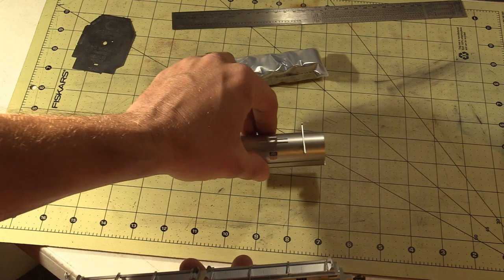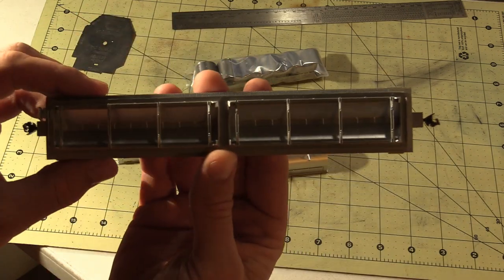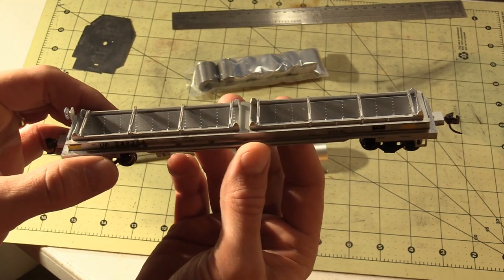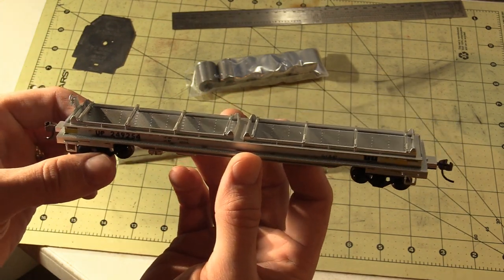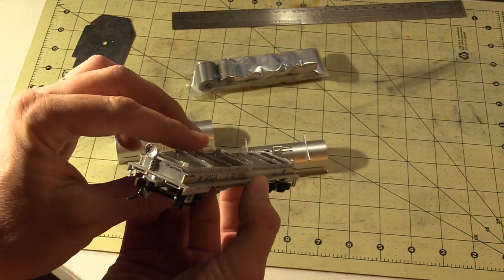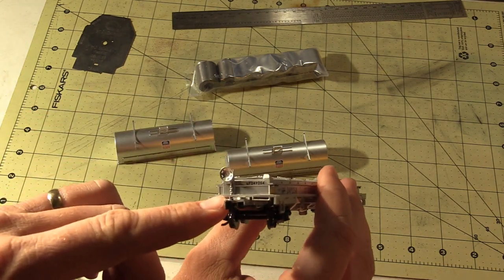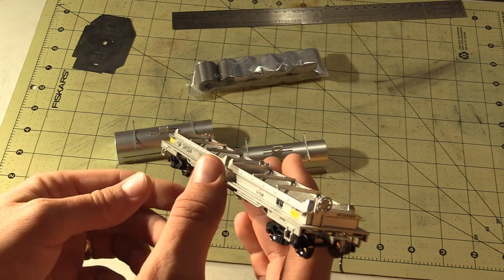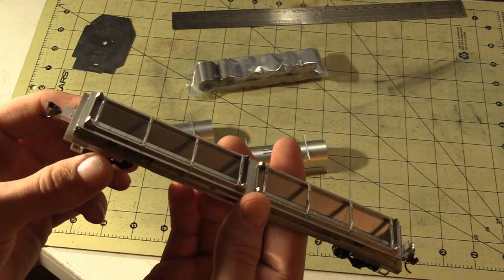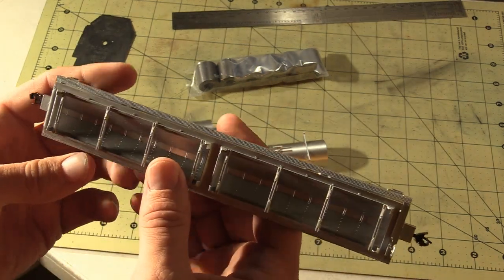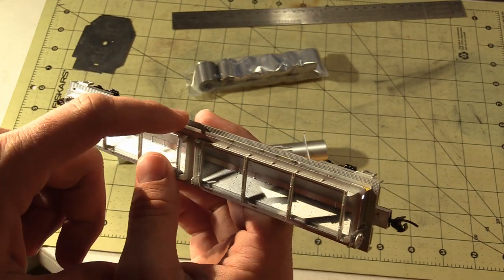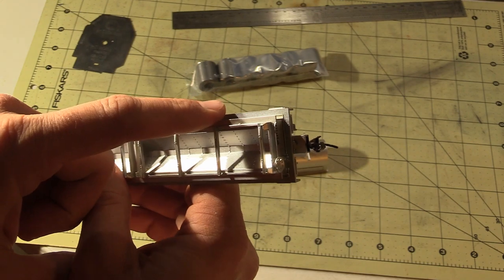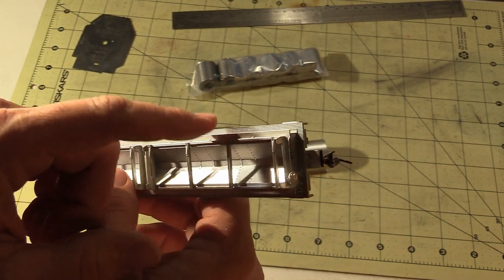And there is some nice rivet detail that's inside the floor of the car where the coils would go. It does have a brake wheel as the chain is molded on to the brake wheel frame there. So looks like everything is just molded on. There's no separately applied detail. There is some diamond plate tread, or not diamond plate tread, but there is some tread walkway detail there.